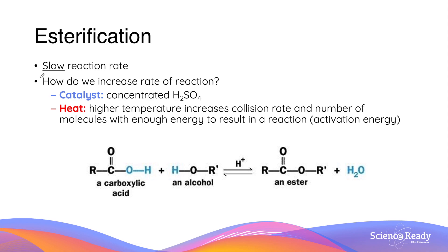Esterification is naturally a very slow reaction, so usually a catalyst and heat are used to increase the rate of reaction to produce the ester in a shorter amount of time. Concentrated sulfuric acid, H₂SO₄, is the go-to catalyst as it lowers the activation energy of the reaction by providing an alternate reaction pathway. Heat increases the rate of collision between molecules and provides more energy to the system so more molecules have enough energy to result in a chemical reaction when they collide.